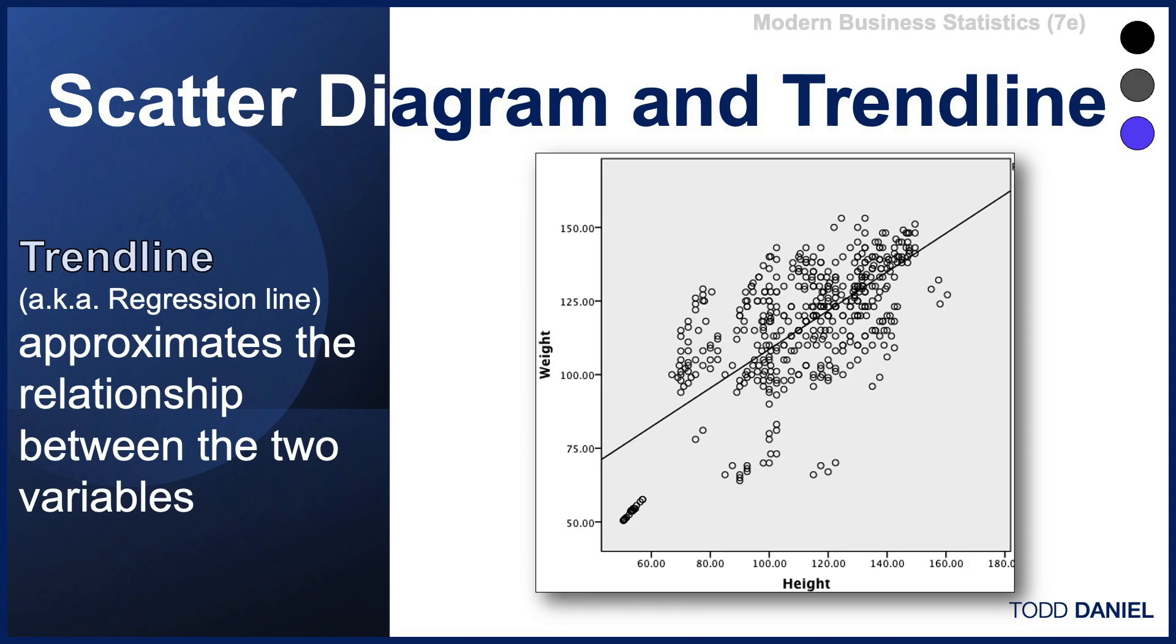Move across horizontally to the y-axis and determine that a typical weight associated with a height of 120 centimeters would be somewhere around 115 kilograms.